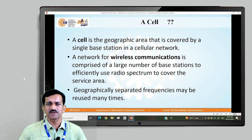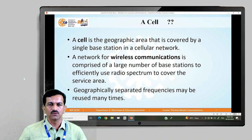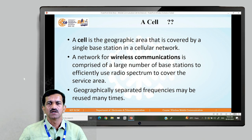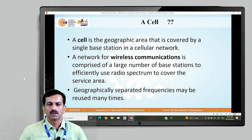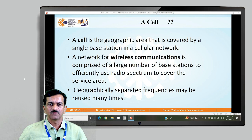To cover the service area, not all the area will be covered by one particular base station, so there are a number of base stations, and a number of geographical areas are connected with their respective base stations. Geographically separated frequencies may be reused many times. Frequency reuse is one key concept — adjacent cells use different frequency bands, but we can reuse frequencies in farther cells. That is nothing but frequency reuse.